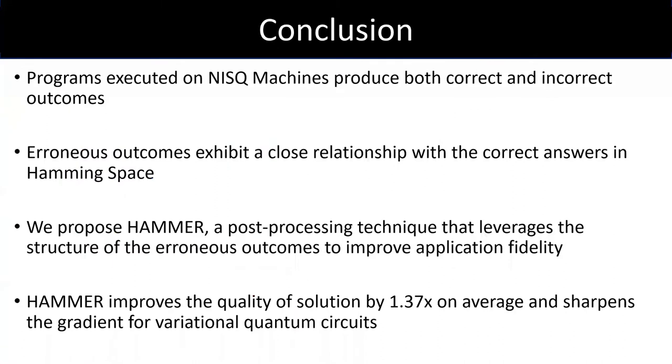Currently, we are in the NISQ era where we have quantum computers that are noisy. And due to noisy qubits, we get both correct and incorrect outcomes and low application fidelity. To leverage NISQ hardware, we must mitigate undesired effects of qubit errors. We observe that erroneous outcomes are not at random. They show a close relationship with correct answers in Hamming space. We propose HAMMER, a post-processing technique that leverages the structure of erroneous outcomes to improve application fidelity. Our evaluations show that HAMMER improves the quality of solution by 1.37x on average and also sharpens the gradient for variational quantum circuits. With this, I'll conclude my talk and happy to take any questions.